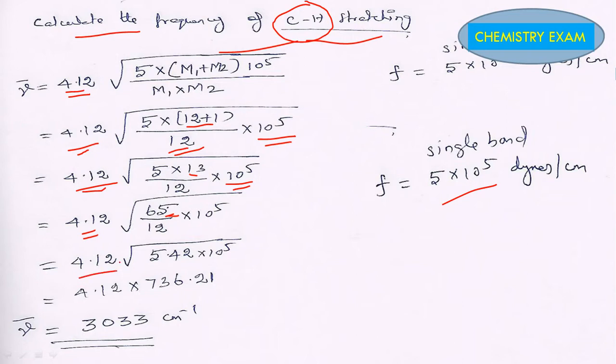4.12 times the square root of 65 divided by 12 equals 5.42×10^5. We can keep down this 4.12 and then simplify this square root of 5.42×10^5. What we'll get is 736.21. We can multiply these two values and get a wave number value of 3033 cm^-1.